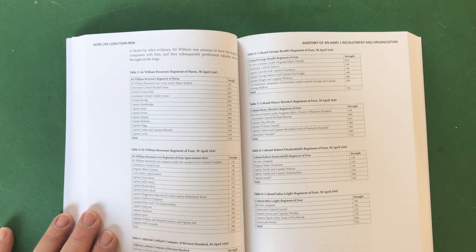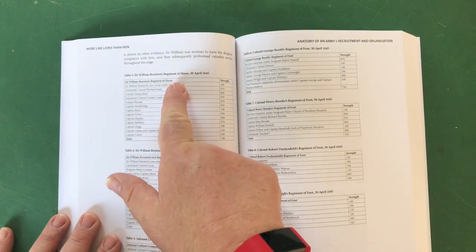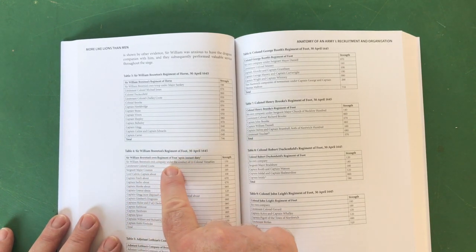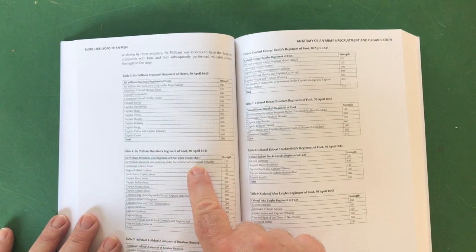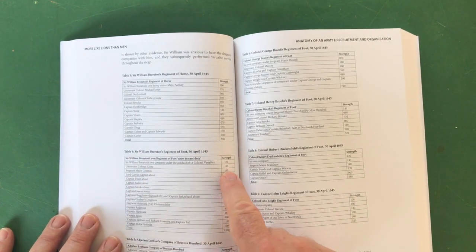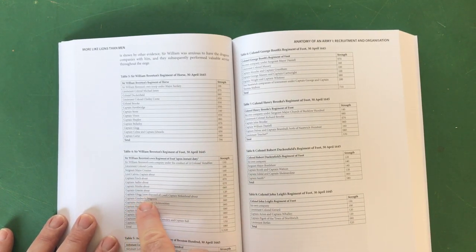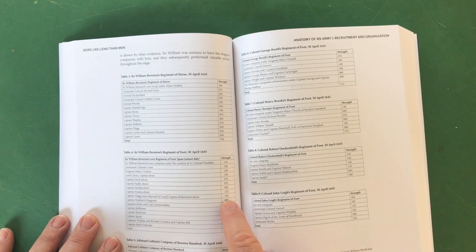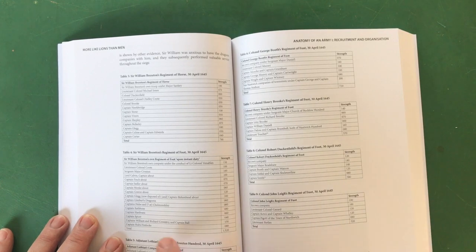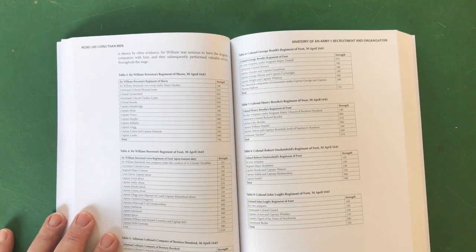If you're creating a small force - relatively small force like the Cheshire army - we've actually got the names of the people involved, the names of the troop commanders, the company commanders. Here's the Regiment of Foot - so that's the Regiment of Horse, this is the Regiment of Foot on the 30th of April. Sir William Brereton's own company under the conduct of Lieutenant Colonel Venables, 150 men. Sergeant Major Croxton 160 men. Captain Saddler about 70 men. Captain Gimbert's Dragoons 60 men. Captain Rathbone 80 men and so on and so forth. Captain Holt's Firelocks 80 men. This is fantastic stuff.